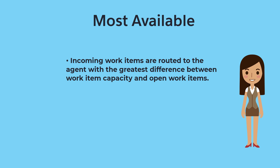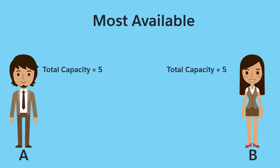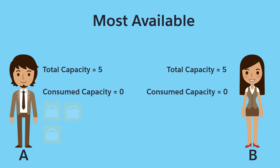Let's look at an example of this scenario with our two agents. Like before, Agent A and Agent B each have an overall capacity of five. Agent A has three active work items, while Agent B has one. Because Agent B has the most open capacity, incoming work items are routed to Agent B.